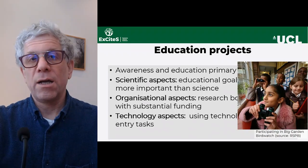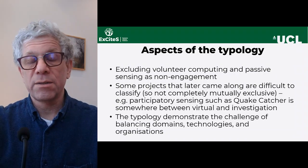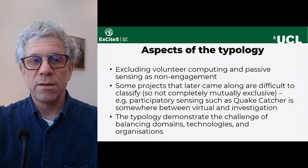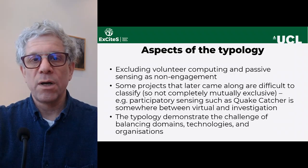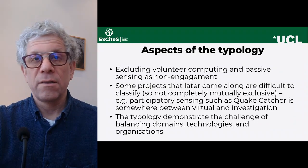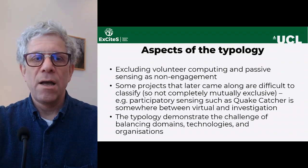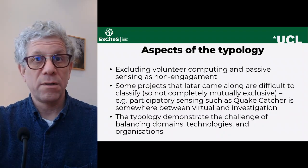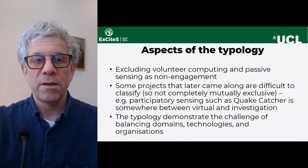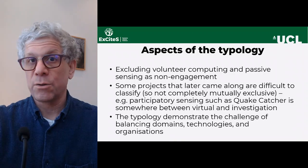Looking at the typology more broadly, it excludes volunteer computing, where people provide their computing resources for scientists, and it does not include passive sensing activities, as it assumes a certain minimal level of engagement to be included in citizen science. Some projects that came along later are difficult to classify because they sit between infrastructure and physical environment, demonstrating the challenges of balancing domains, technologies, and organizations.